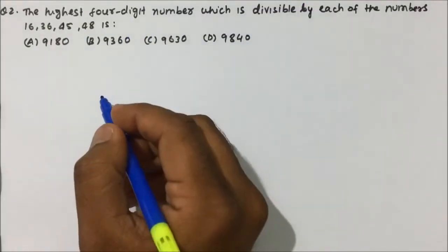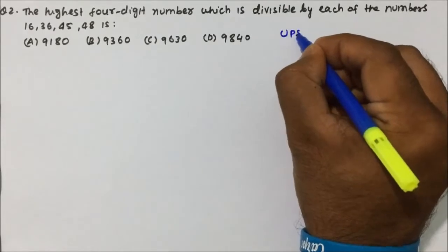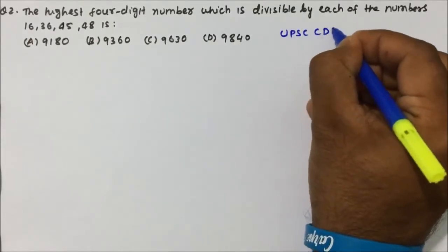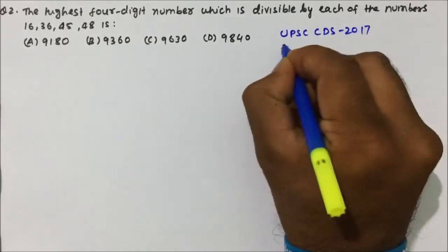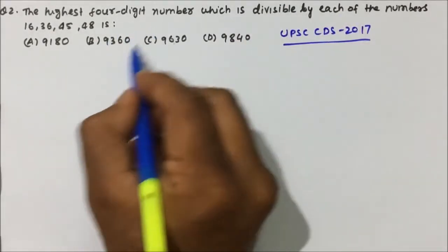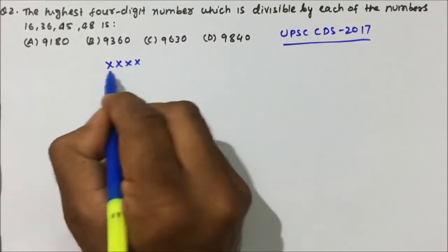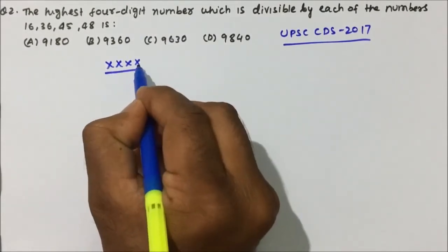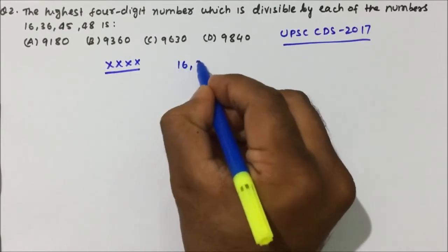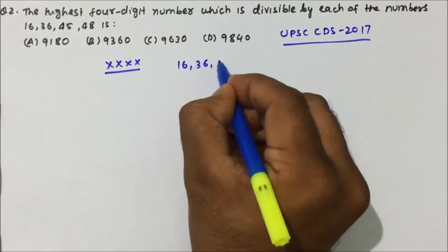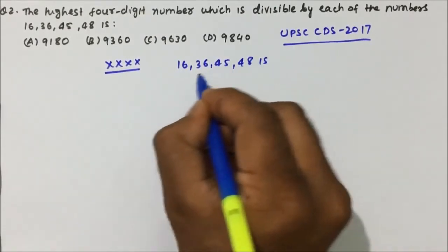Let us understand question number 2 and try to solve it — this is also asked in UPSC CDS 2017. The question is: what is the highest 4-digit number which is divisible by each of the numbers 16, 36, 45 and 48?